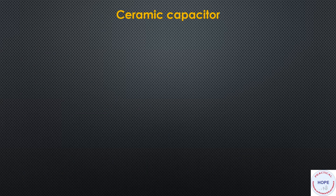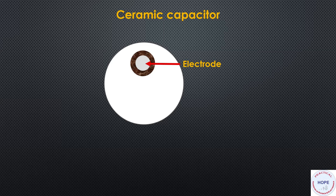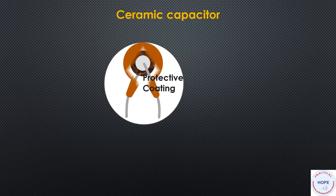The first type is the ceramic capacitor. It has a disc of ceramic which acts as the dielectric, with electrodes on both of its sides and connecting wires. It is encapsulated using a protective coating, and there is a number on it which defines its capacitance value.